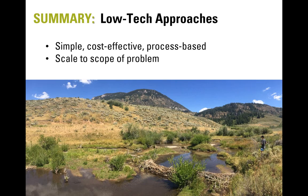More broadly, all of the low-tech approaches discussed are simple, cost-effective, and process-based — designed to mimic and promote natural processes. Importantly, they can scale up to match the scope of the problem. Tips about what structure type to use, what construction method to apply, and whether to use willow or juniper all help increase efficiency, enabling implementation across larger spatial scales in a wide range of wadeable streams.